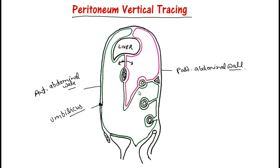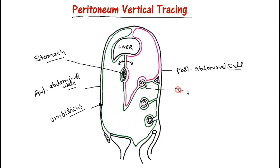The greater omentum again reflects toward the transverse colon. So this is the stomach, this is the transverse colon, and this is the pancreas.